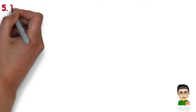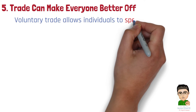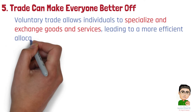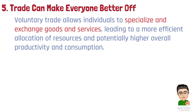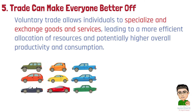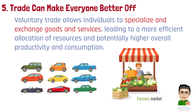Number 5: Trade can make everyone better off. Voluntary trade allows individuals to specialize and exchange goods and services, leading to a more efficient allocation of resources and potentially higher overall productivity and consumption. Example 1: A country that exports wine and imports cars can enjoy a wider variety of vehicles and a higher standard of living through this exchange. Example 2: Local farmers trading produce with each other can lead to a more diverse diet and more efficient use of resources, as each farmer specializes in what they grow best.